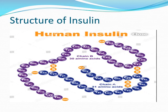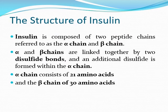In this slide you can see the structure of insulin. Insulin is made up of two peptide chains: the alpha chain and the beta chain. Both chains are joined together with disulfide bonds, and an additional disulfide bond is found within the alpha chain itself. The alpha chain consists of 21 amino acids and the beta chain consists of 30 amino acids, making a total of 51 amino acids in insulin.